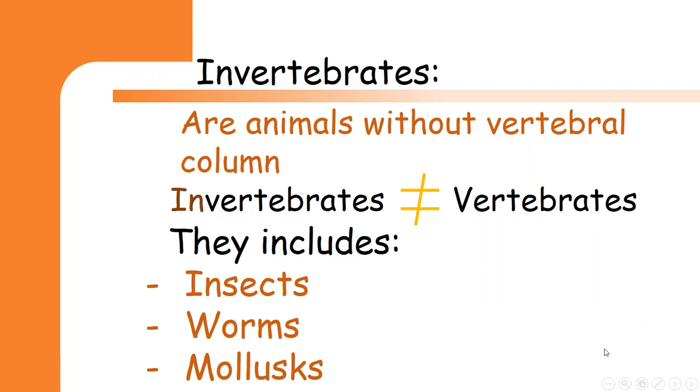So, invertebrates are animals without a vertebral column. They include insects, worms, and molluscs.